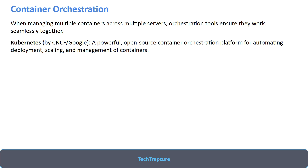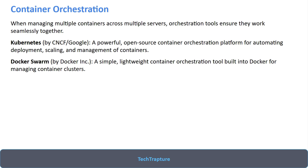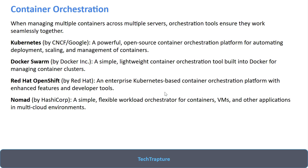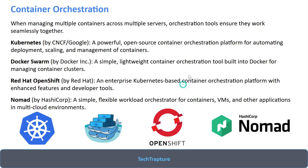The most famous container orchestration tool is Kubernetes — a powerful open-source container orchestration platform by Google for automating deployment, scaling, and management of containers. Docker Swarm by Docker is a simpler, lightweight orchestration tool. OpenShift by Red Hat is an enterprise Kubernetes-based container orchestration platform with enhanced features and developer tools. Nomad by HashiCorp is a flexible workload orchestrator for containers, VMs, and other applications in multi-cloud environments.